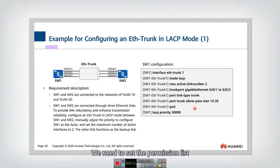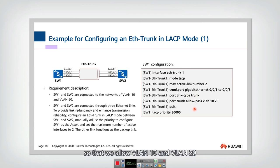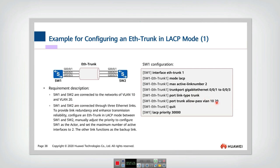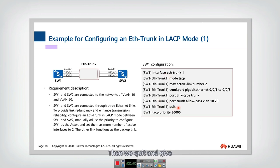Then we set the permission list, allowing VLAN 10 and VLAN 20. That is the permission list configuration. That's all for the trunk one configuration.